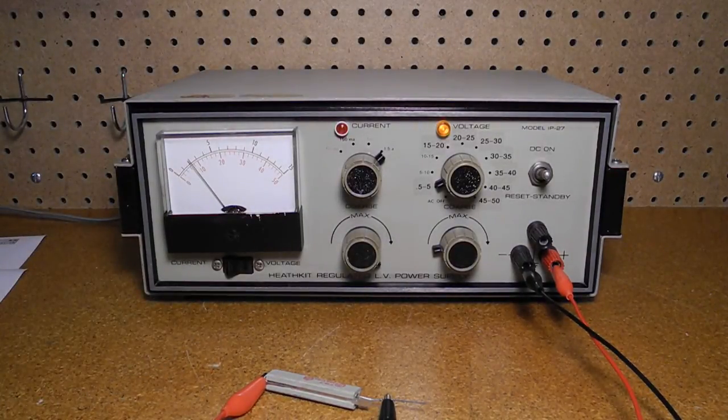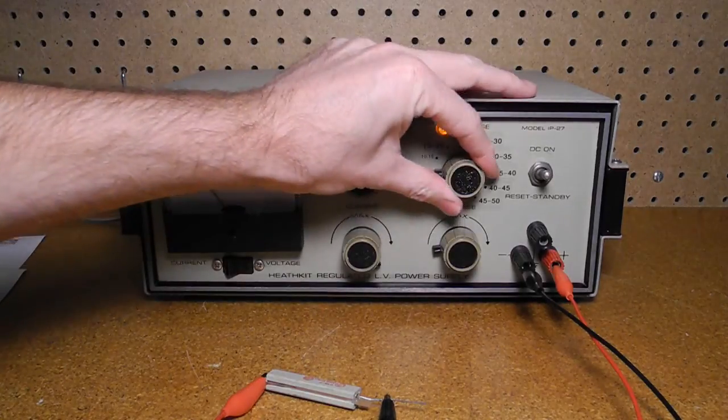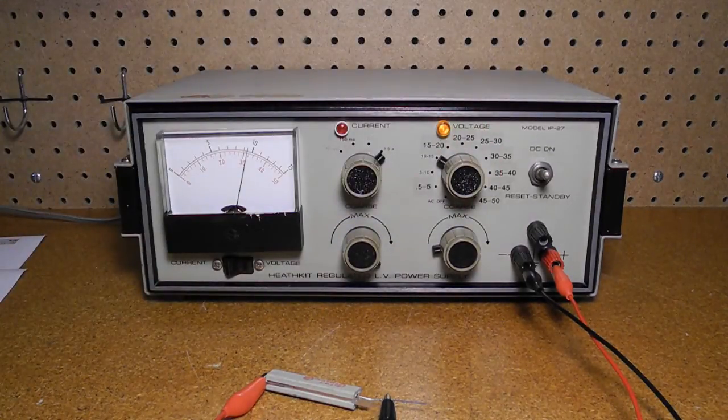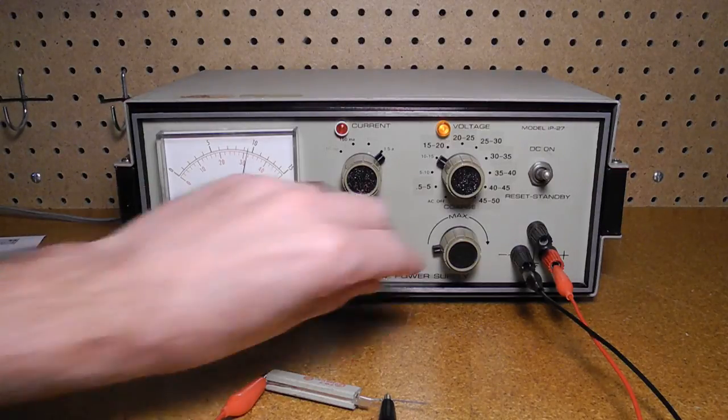We select a suitable voltage range for the desired voltage, in this case the 10 to 15 volt range. Then we adjust the fine voltage control for the desired 12 volts on the meter.